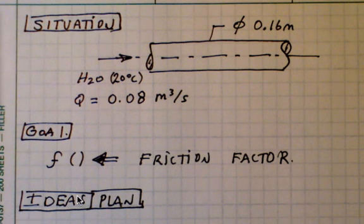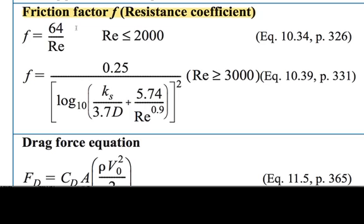Let's go to our ideas and plan. Table F2 gives equations for the friction factor f, and the friction factor depends on the value of Reynolds number.